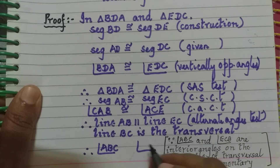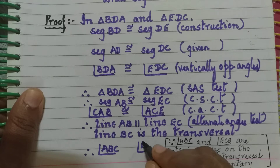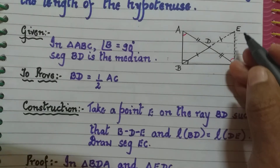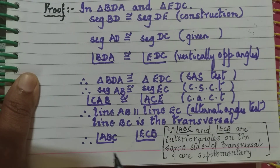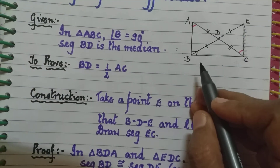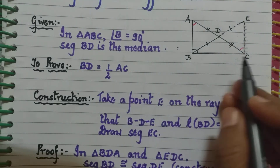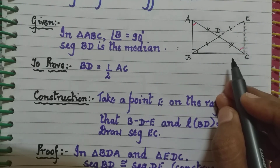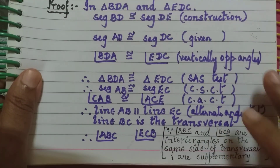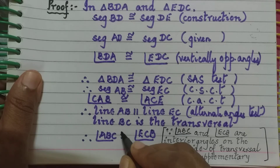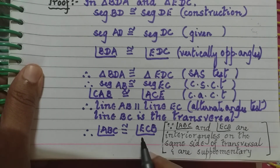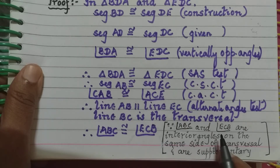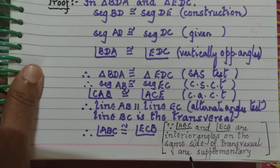Angle ABC will have a relation with angle ECB. Angle ABC is 90 degrees, and since this angle plus angle ECB is 180 degrees, angle ECB is also 90 degrees. Therefore, angle ABC is congruent to angle ECB, because they are interior angles on the same side of the transversal and supplementary.